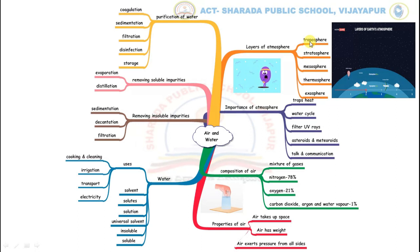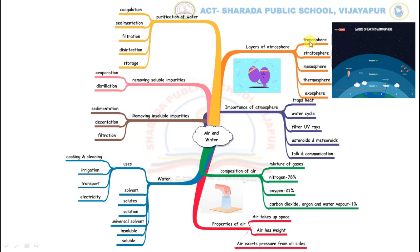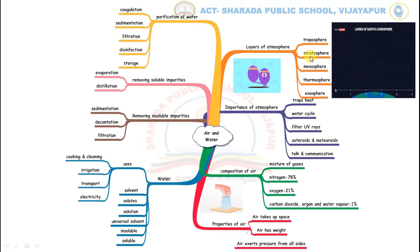Troposphere is the layer closest to the earth where all living things are found. It is also the layer where weather changes are observed. Aeroplanes and jets fly in this layer. The second layer is stratosphere. It contains about 90% of the ozone in the atmosphere, which forms the ozone layer.